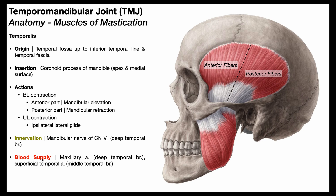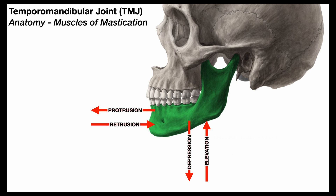Blood supply to the temporalis is provided by the deep temporal branches of the maxillary artery, and also the middle temporal branches of the superficial temporal artery. For our cheat sheet: anterior fibers of the temporalis produce mandibular elevation, and the posterior fibers produce mandibular retrusion. An important note — the posterior fibers of the temporalis are the only muscles of mastication that cause mandibular retrusion.